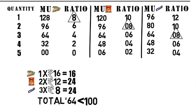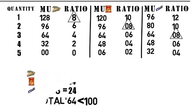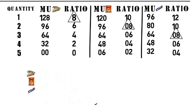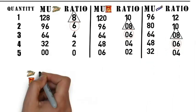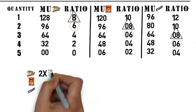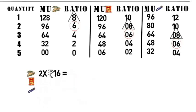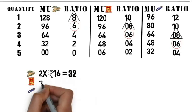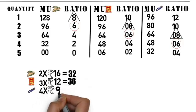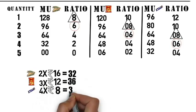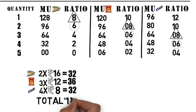We wish to know how will he spend his Rs.100 to gain maximum satisfaction. Let's try it with the second ratio. Let's say your friend tries to equate the ratio of 6. In that case, your friend will have to buy 2 sandwiches worth Rs.32, 3 chips worth Rs.36, and 4 chocolates worth Rs.32. This way, he'll be spending his entire Rs.100.